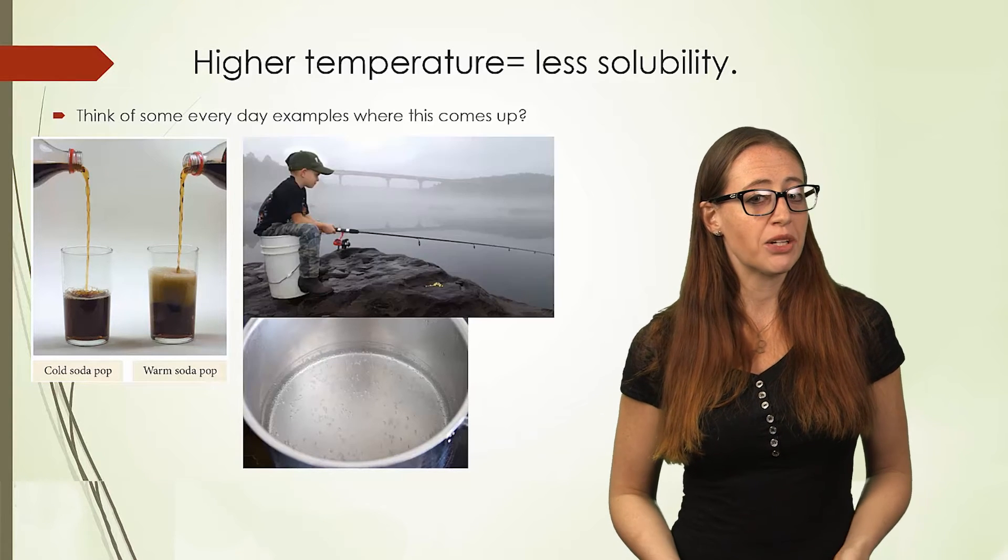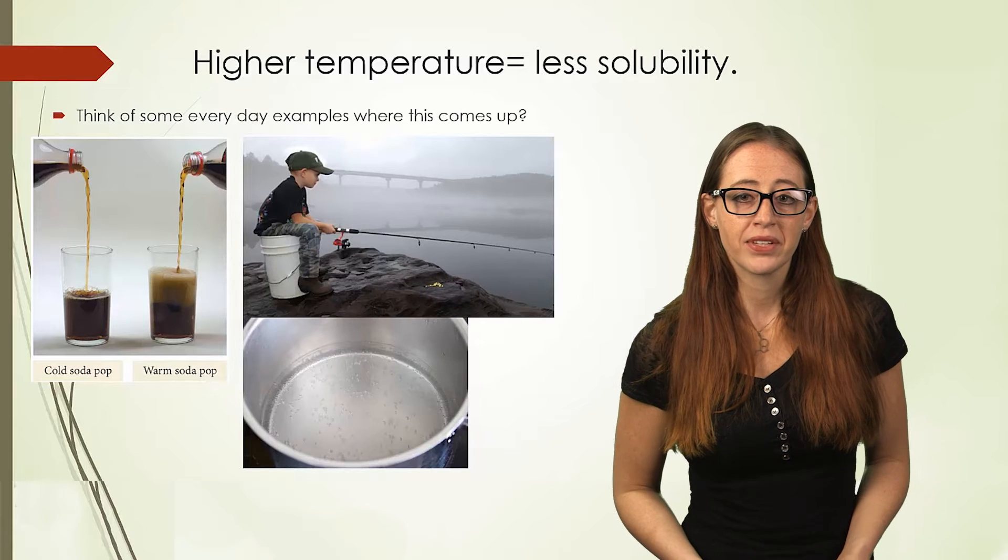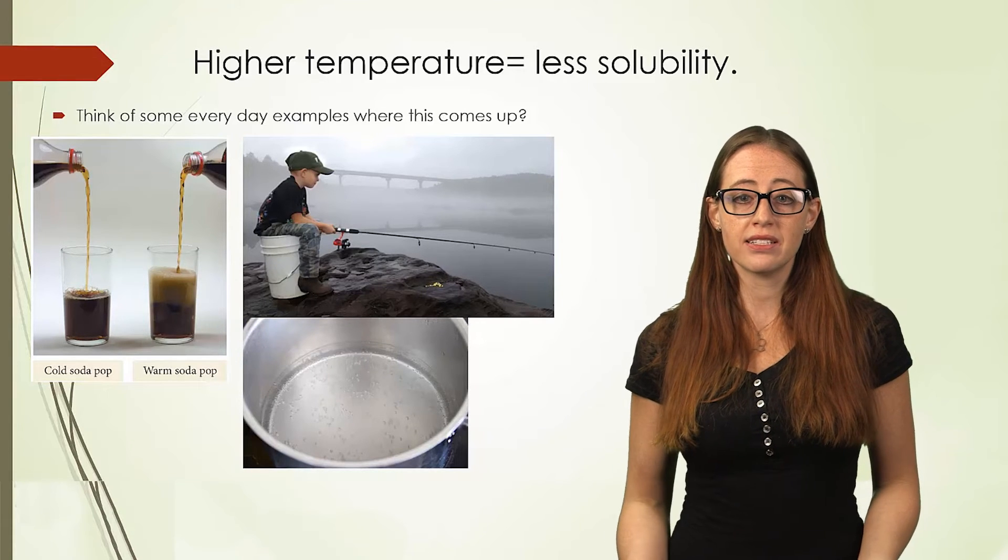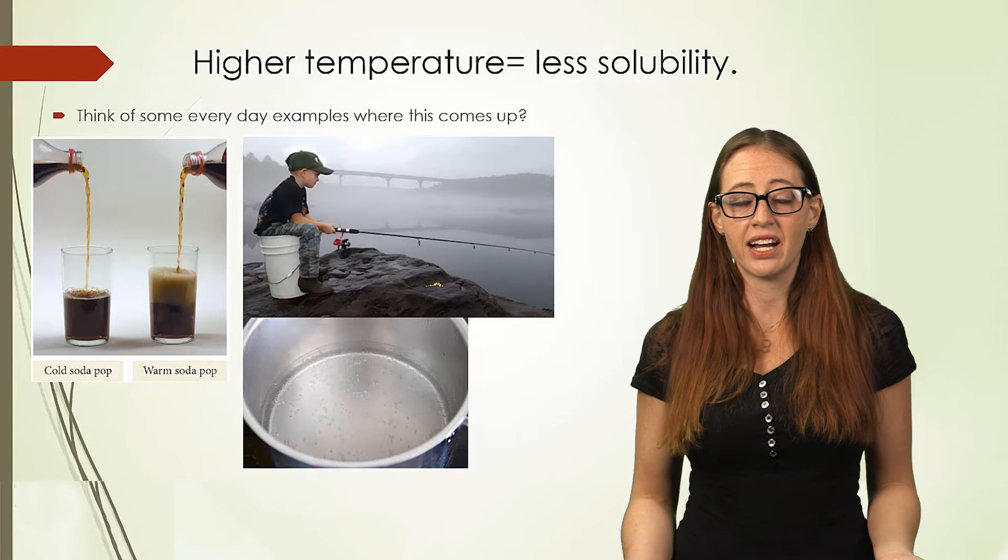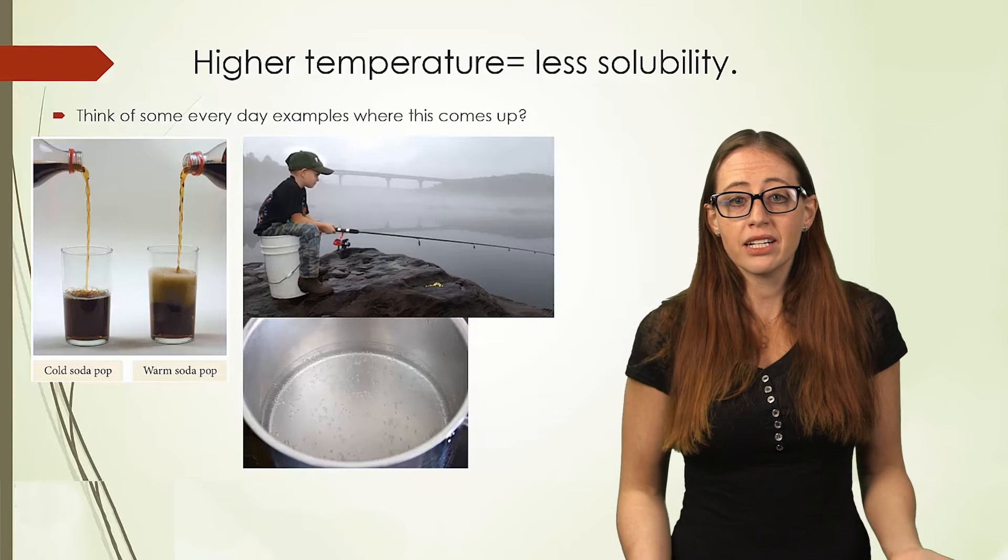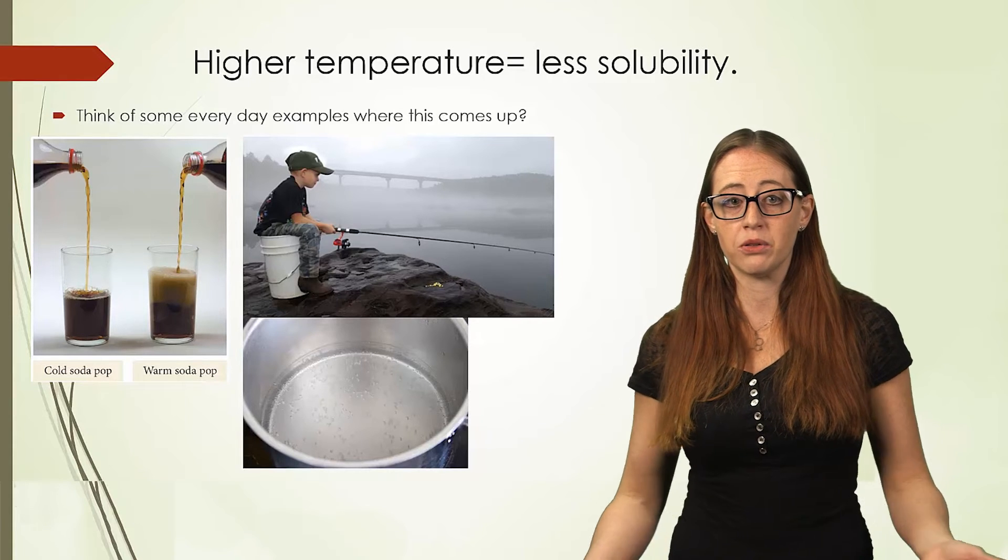Interestingly enough, it's even why fishing on warm days can be problematic. Much of the dissolved oxygen that's in the lake or the river gets released into the air. And the fish, which become pretty low on oxygen because there's a lower amount of oxygen in the water, they get a bit lethargic and they aren't as likely to be out hunting for food.